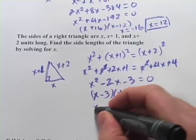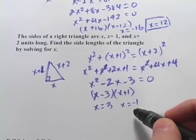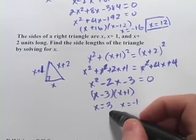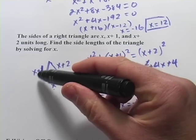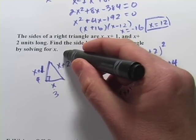And we get x equals 3 or x equals negative 1. And of course, a negative length of a side of a triangle doesn't make sense. So 3 is our answer. And we have 3 and then 3 plus 1 is 4 and 3 plus 2 is 5.